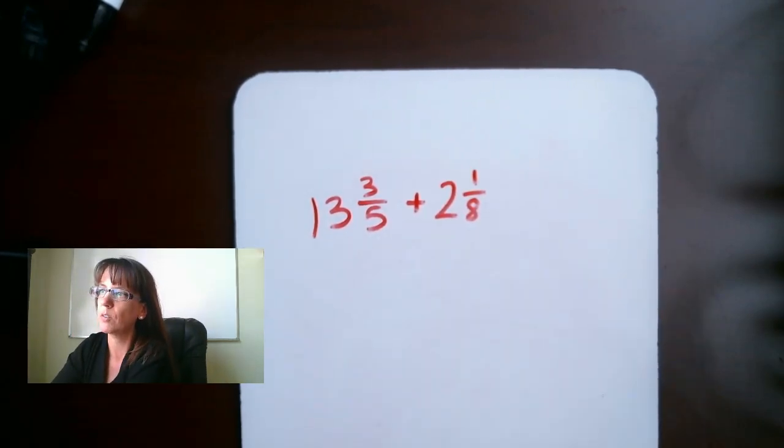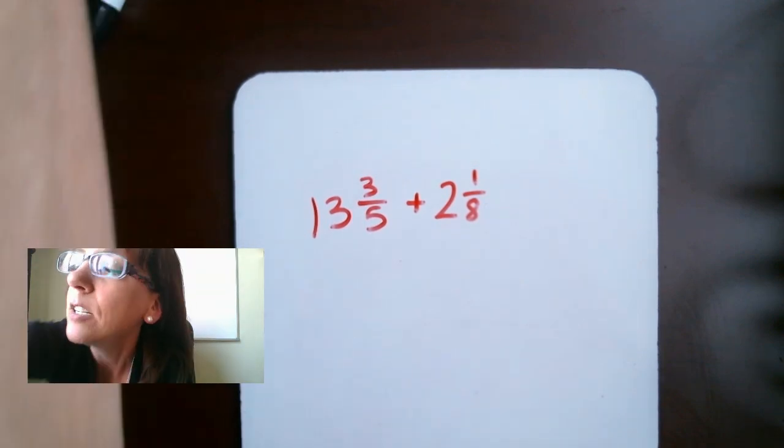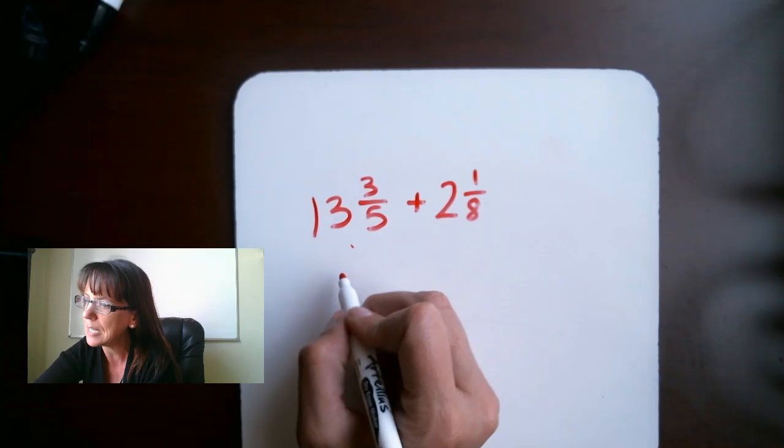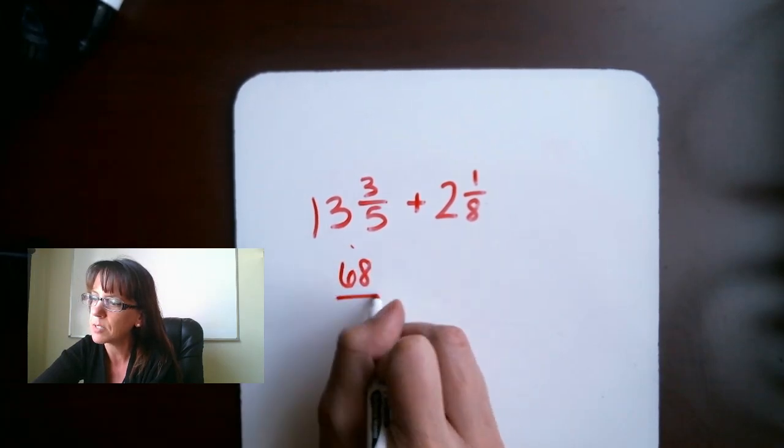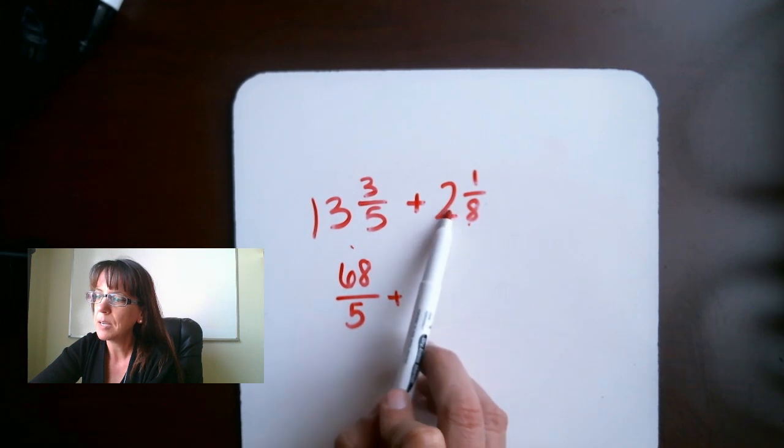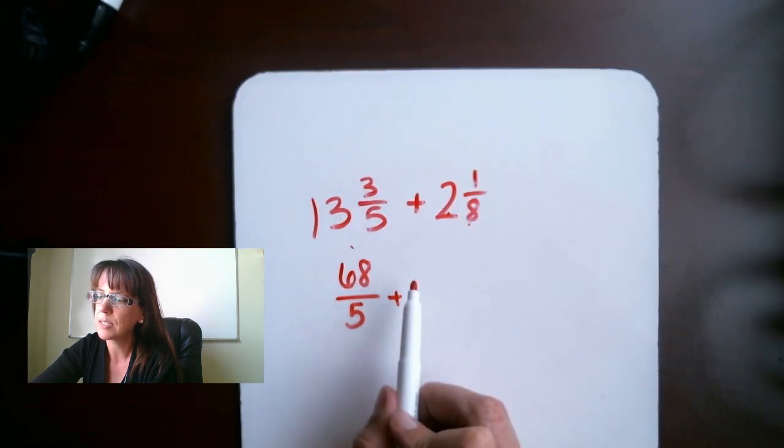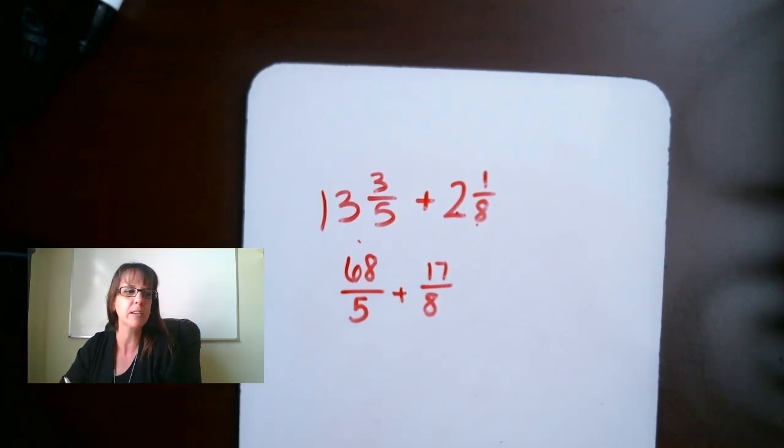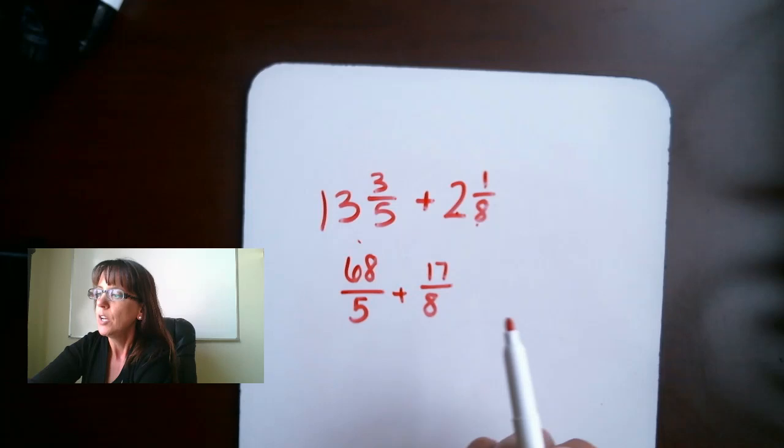We want to go ahead and turn that into an improper fraction, that first one. So we've got 13, we multiply that by 5, we add 3 to it, and we end up with 68, and that denominator stays the same, 5. Plus, and then we do 8 times 2 is 16, plus 1 is 17, we have 17 over 8. Now we are ready to find our common denominator.